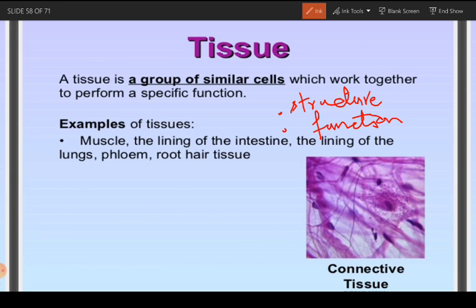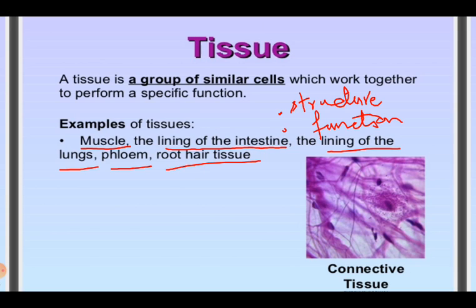Examples of tissues: muscles — this is a type of tissue. Then the tissues of the lining of the intestine, the tissues of the lining of the lungs. In plants: phloem tissues, root hair tissues, and xylem tissues. These are all examples of tissue.